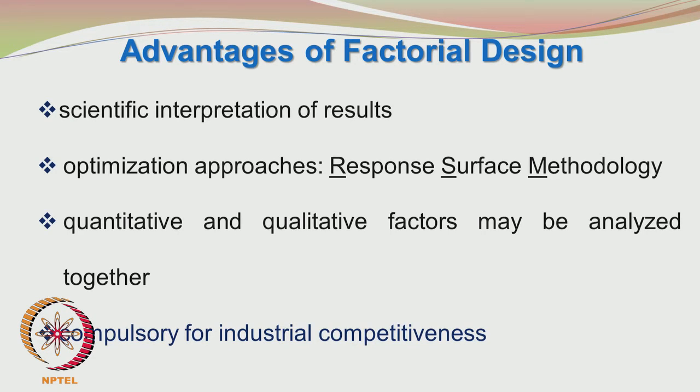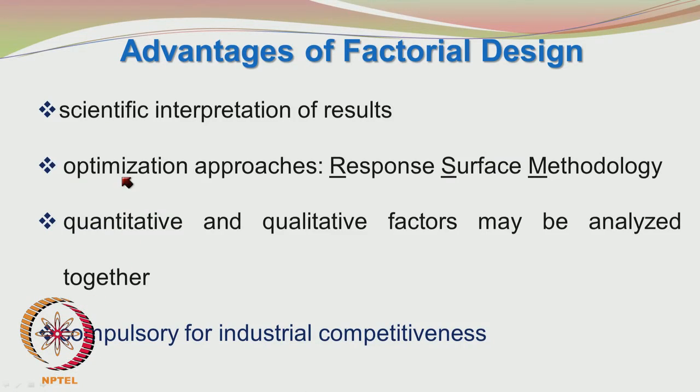Next we move on to factorial design, where we are talking about not a single factor but more than one factor. We can have multiple factors set at two levels. In factorial designs of level 2, we can go for any number of factors — 3, 4, 5 — but each factor will be set at only two levels: a lower level and a higher level, called minus one and plus one settings. The advantages of factorial design include helping to analyze and interpret results in a scientific manner, carrying out response surface methodology, and analyzing qualitative and quantitative factors together. For example, temperature, pressure, and the type of catalyst can be analyzed together.